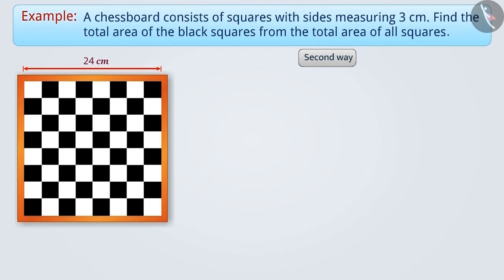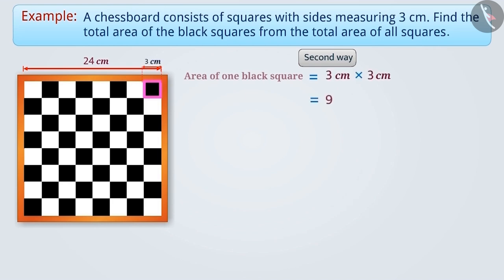The second way is to first find the area of 1 black square, which will be 3 cm multiplied by 3 cm, equal to 9 cm². Now, we will find out how many black squares are there on the board.